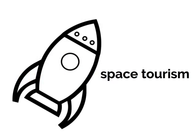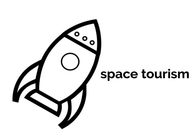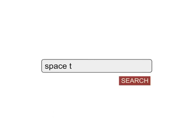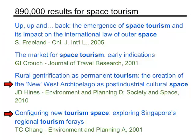Let's say you're interested in finding articles about space tourism. You type your keywords into your favorite database and you get a lot of results — almost 900,000. Some of these sources are about space tourism, but many others are not.